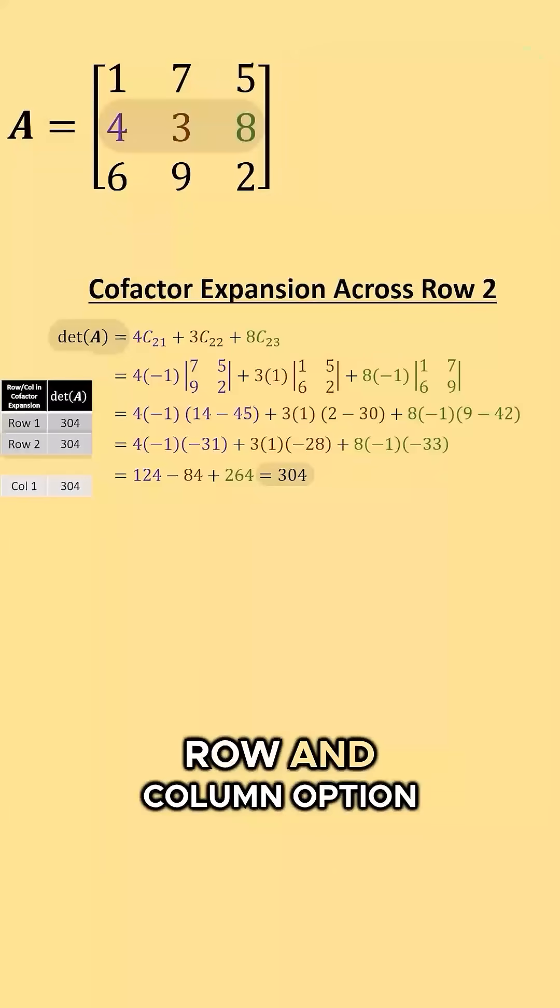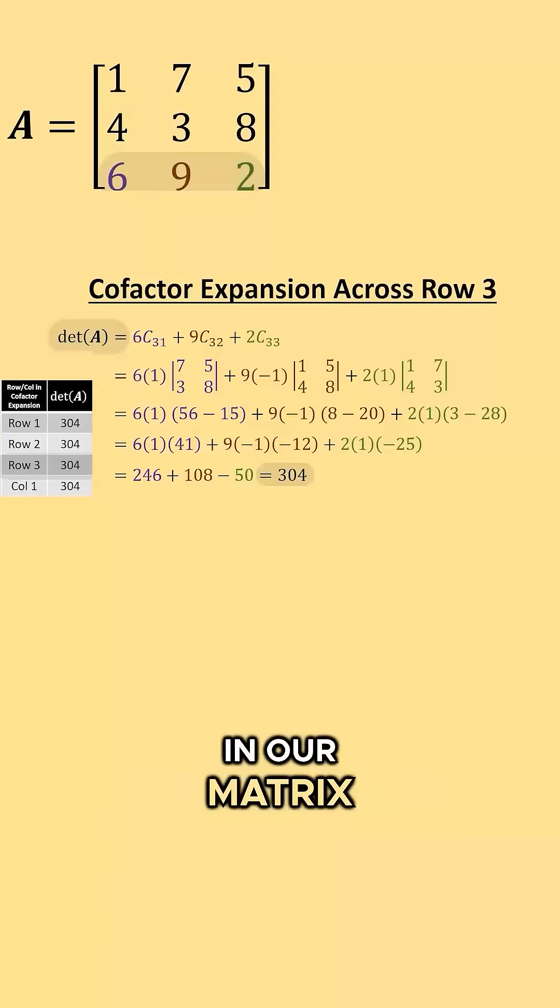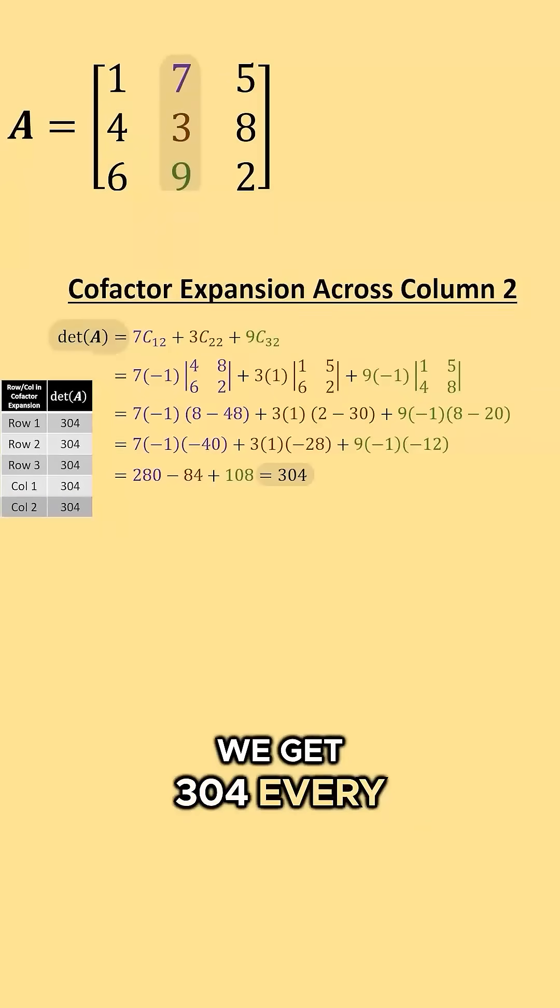For every single row and column option in our matrix A we get 304 every single time. I'll see you next time. Thank you.